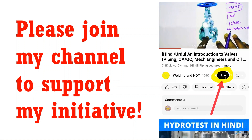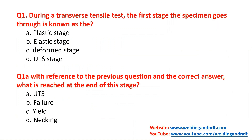Our first question is: during a transverse tensile test, the first stage the specimen goes through is known as what? In leading questions they ask two questions — the second question is supplementary to the first. Question 1A, with reference to the previous question and correct answer, asks: what is reached at the end of this stage?